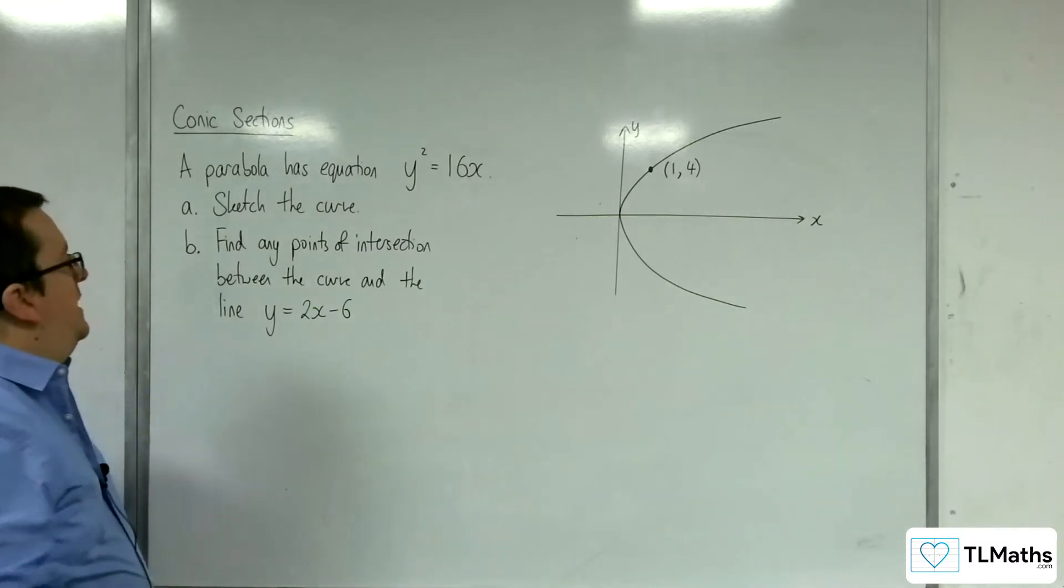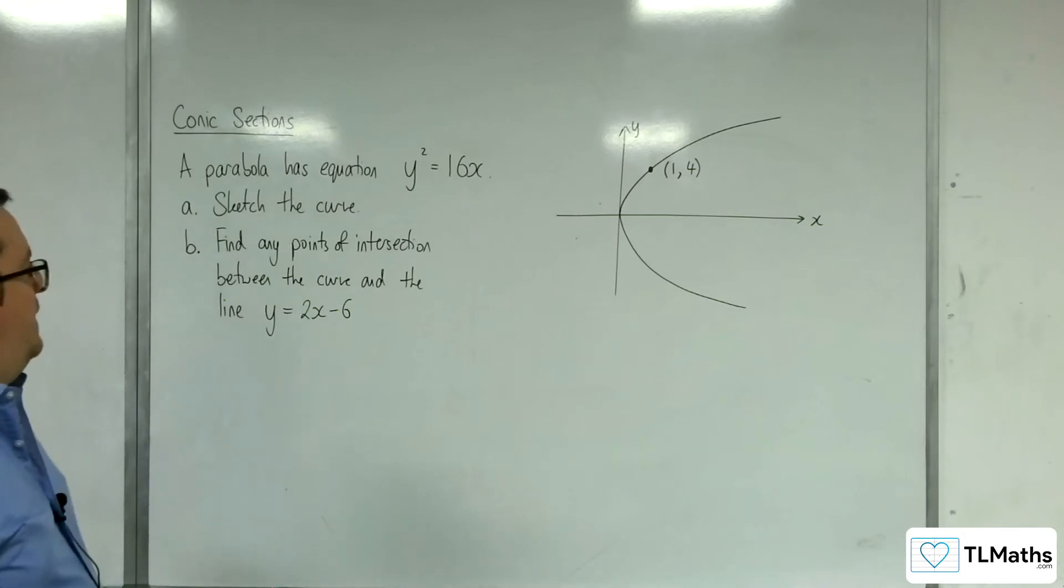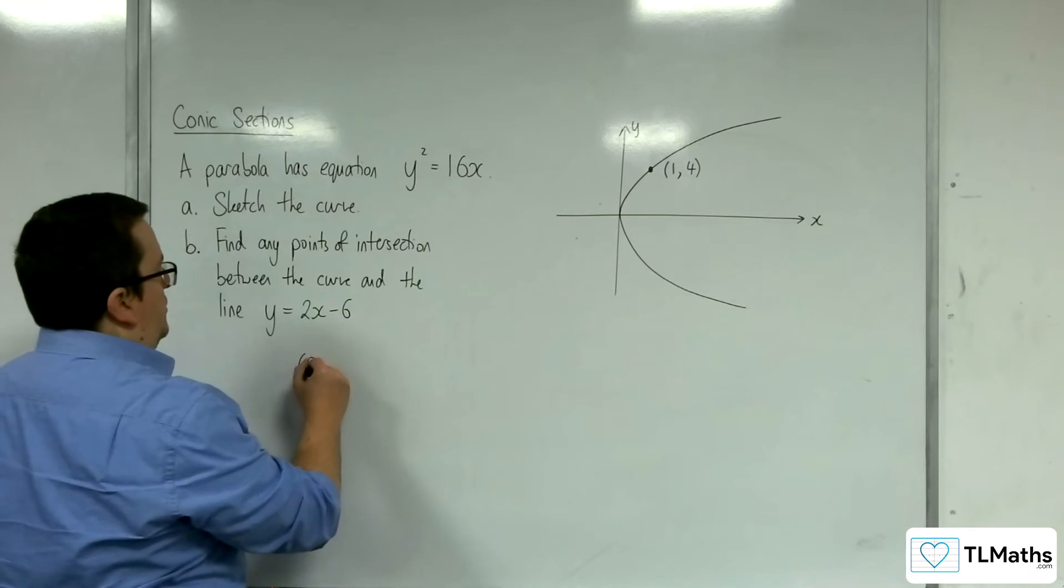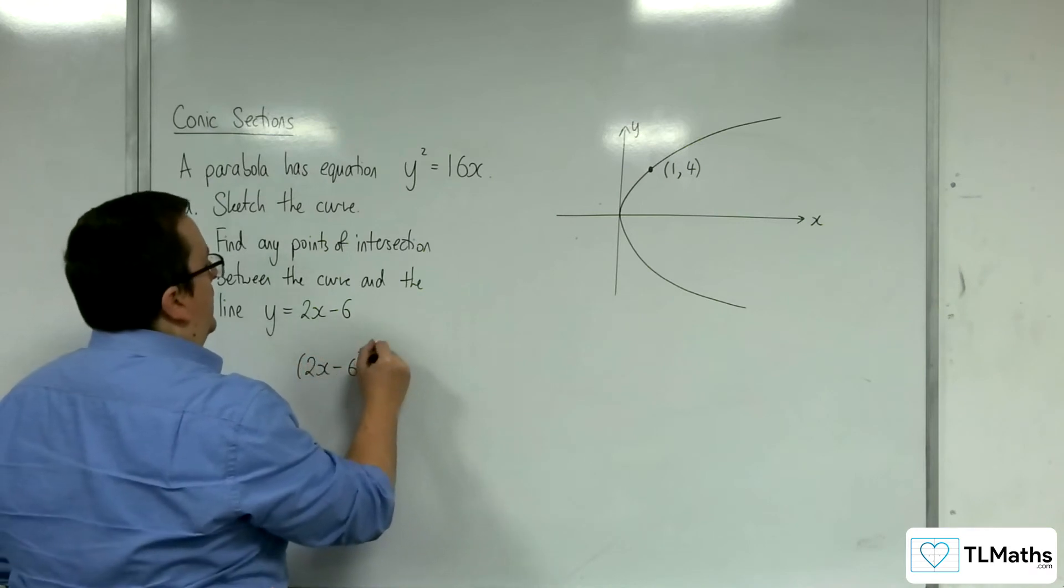So part B, find any points of intersection between the curve and the line y equals 2x take away 6. So we're just going to substitute 2x take away 6 into the equation.